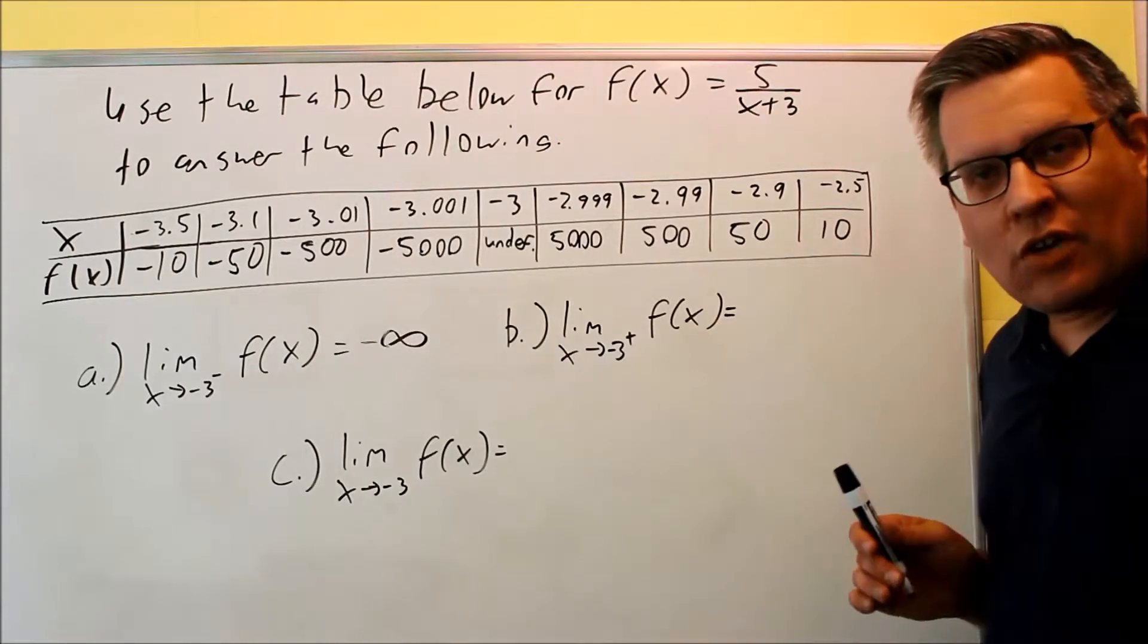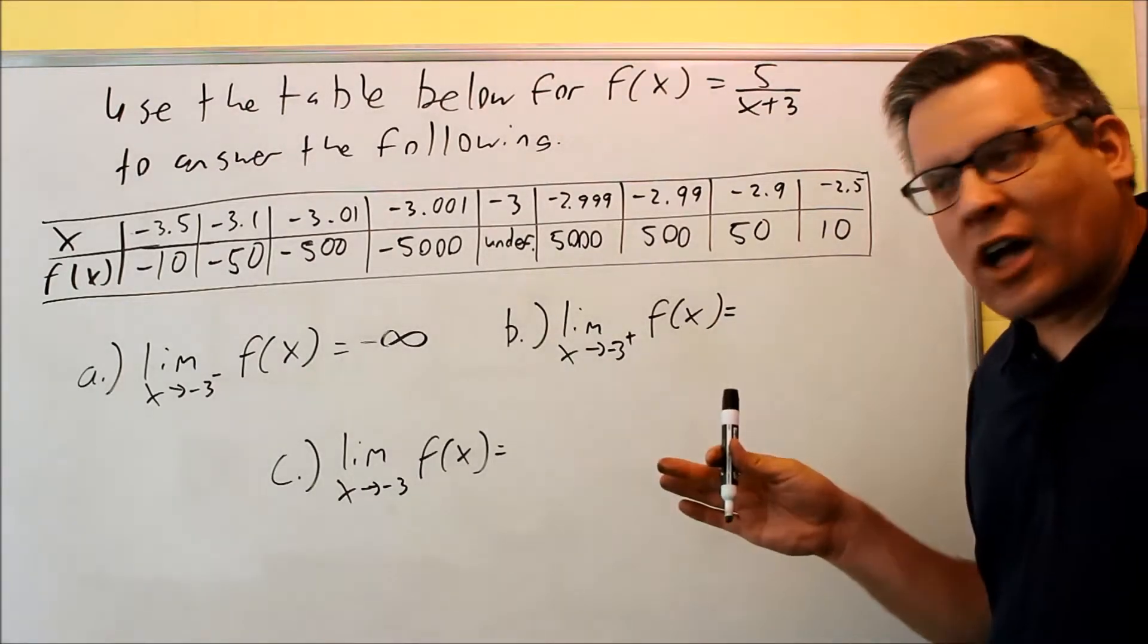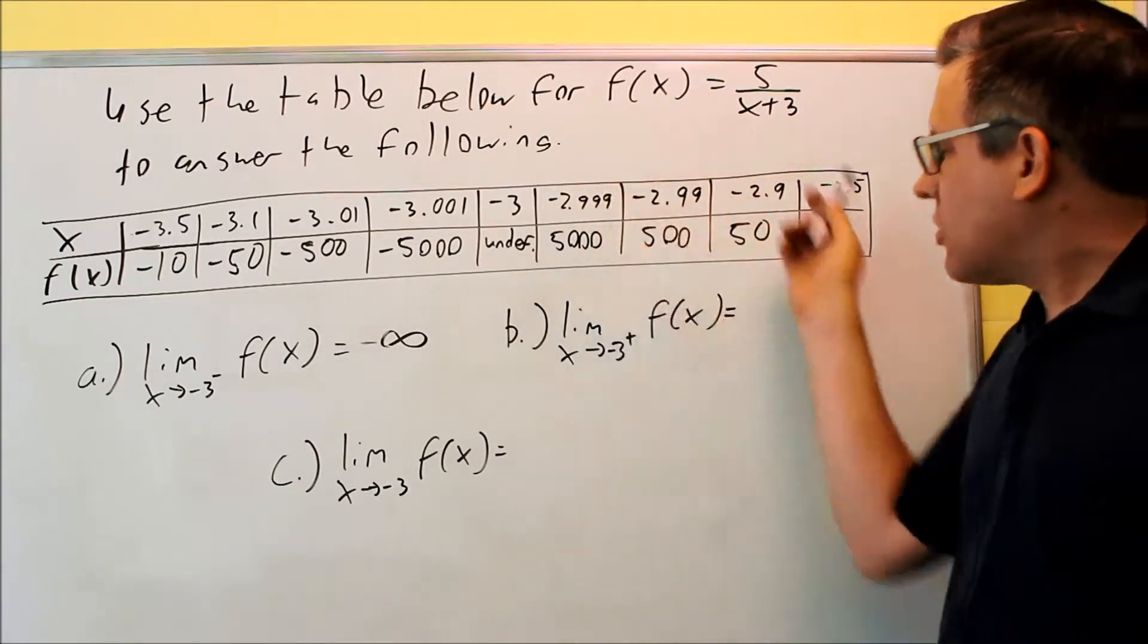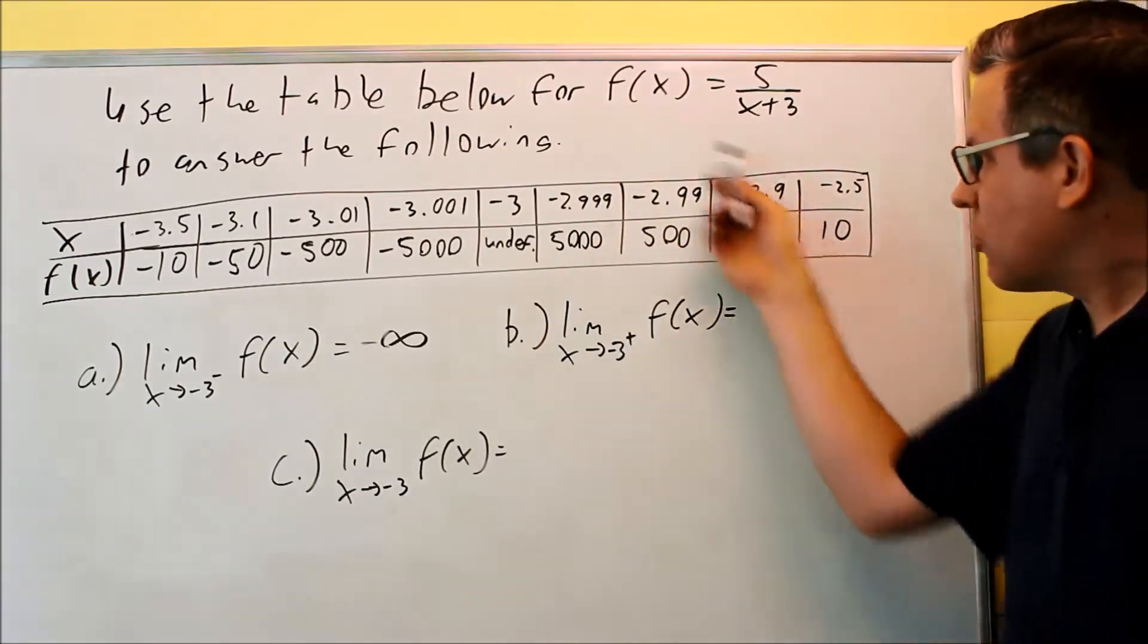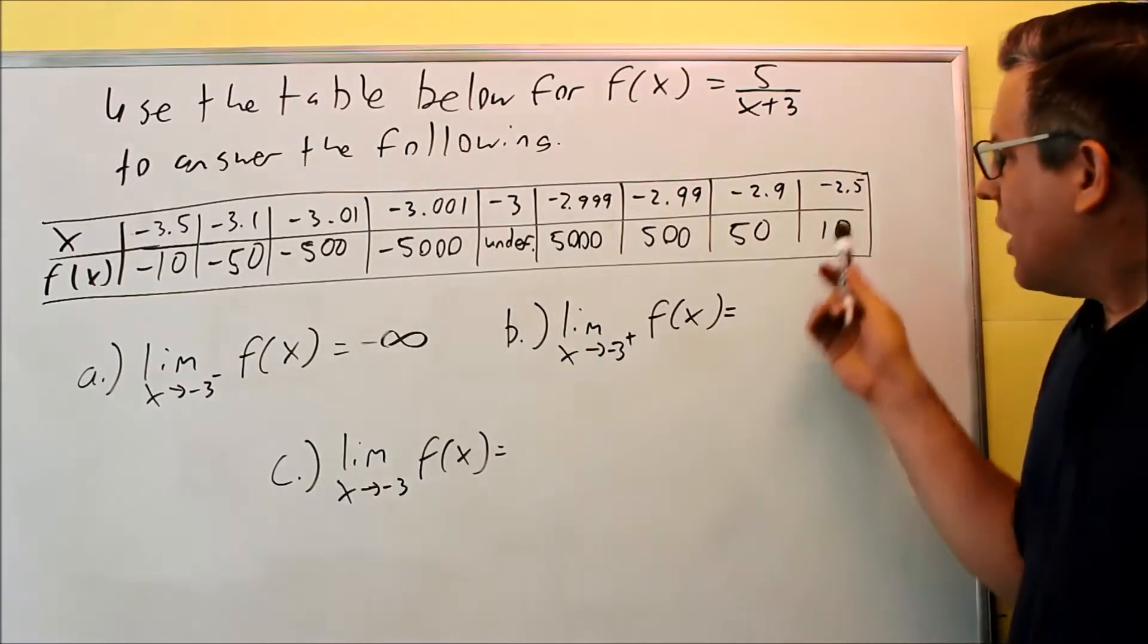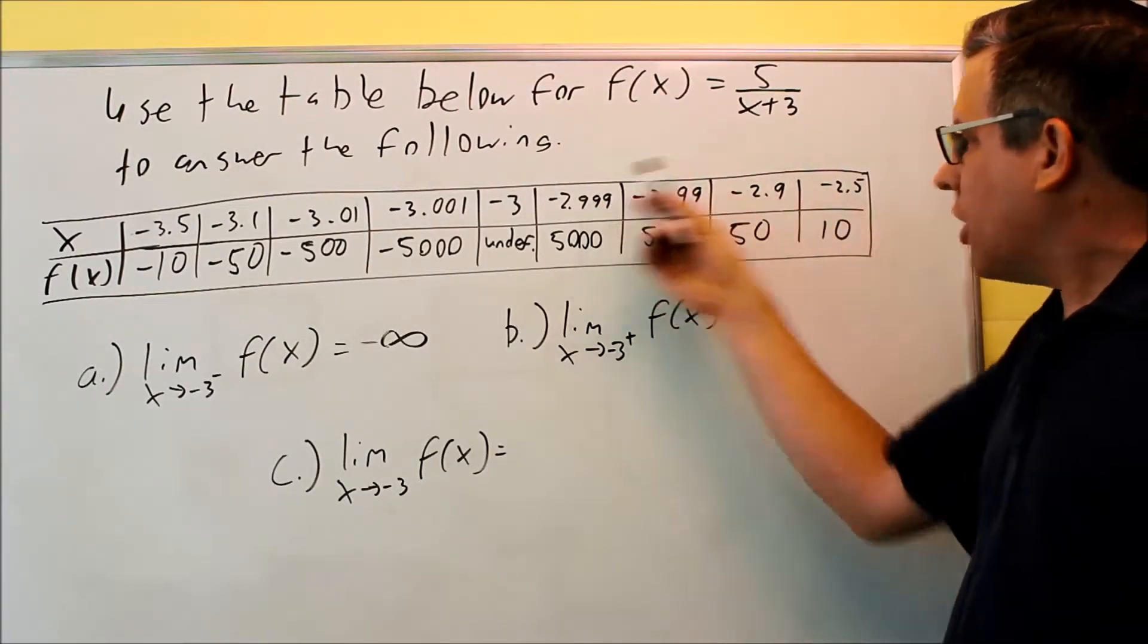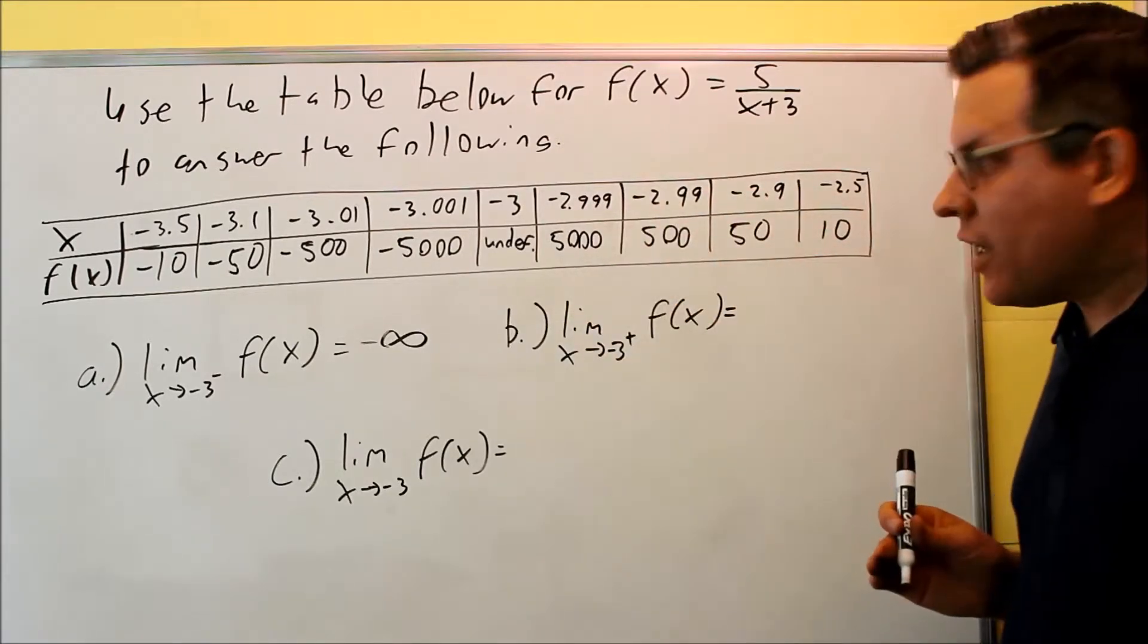Let's look at negative 3 from the positive side. From the positive side, that means you're looking for values that are just slightly larger than negative 3. That would be these here. We're closer to 0, so that's why these numbers here would be larger. And again, we see the same trend as we get closer and closer to negative 3 coming in from the right-hand side—these numbers are getting progressively bigger.